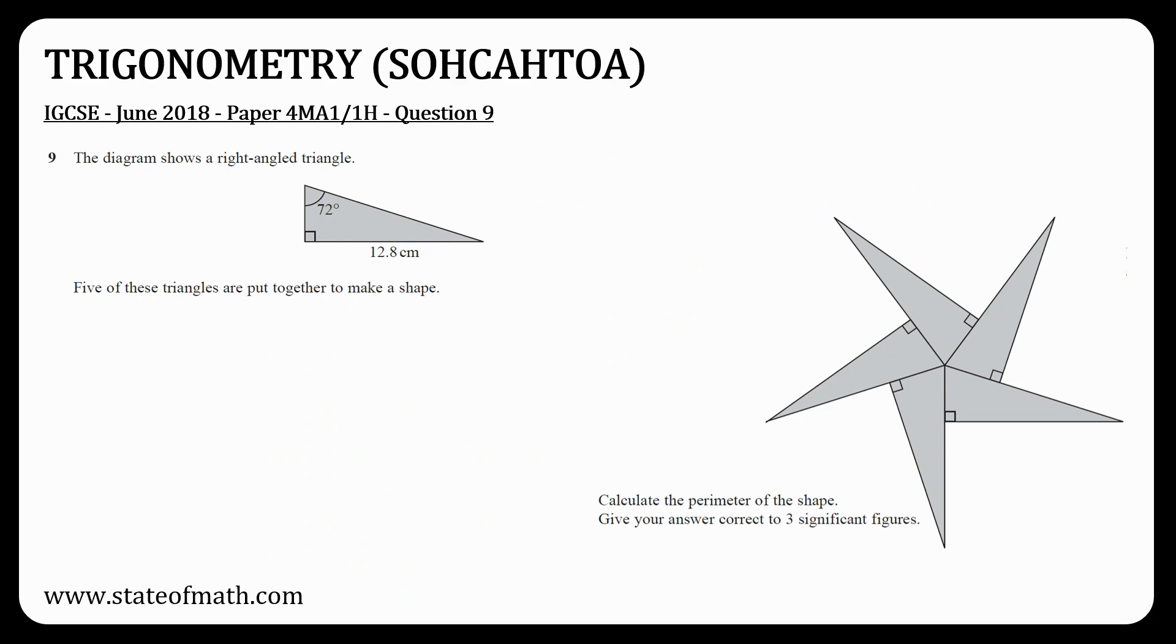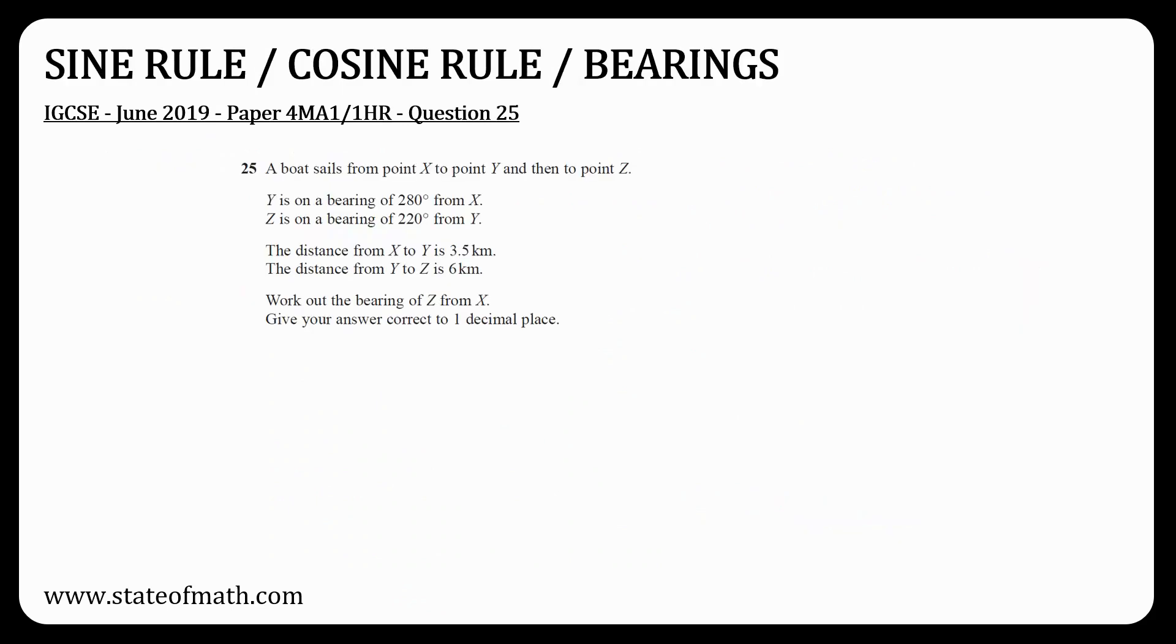In paper 1, there were two questions on trigonometry. One was on 3D trigonometry, and in the other one, you had to use the formula for the area of the triangle. I wouldn't be surprised to see another trigonometry question, either one with a right-angled triangle or one involving the sine or cosine rules. These could easily be combined with bearings and angles of elevation and depression.